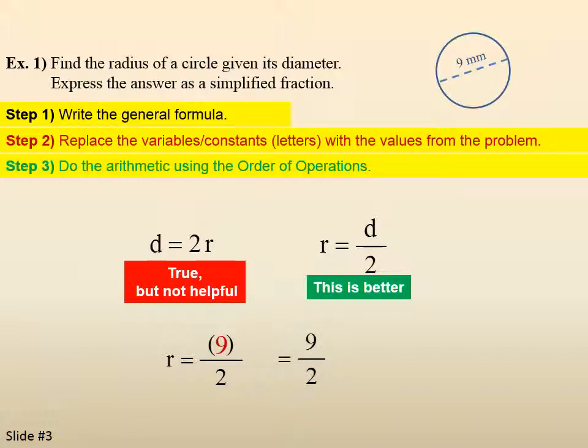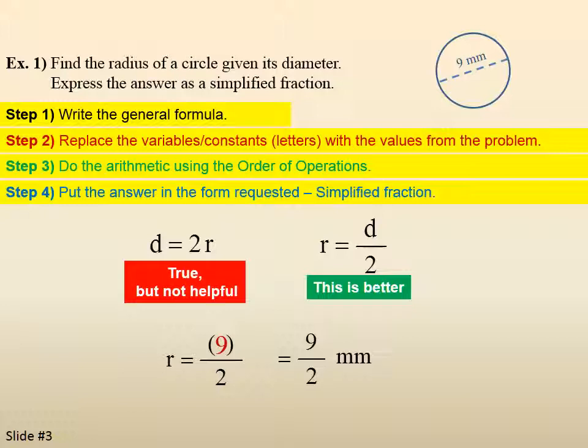I put the answer in the form requested, so if they wanted just a simplified fraction, we don't have to do anything else other than attach the units to it. So it's not an area and not a volume. It's just as is, millimeters. If they'd asked for a decimal, then we'd have to divide. If they'd asked for a mixed number, then we'd have to convert. But here it just says simplified fraction. So the answer is 9 halves millimeters. 9 over 2 millimeters.